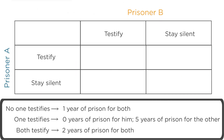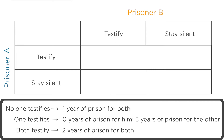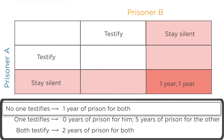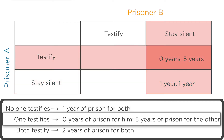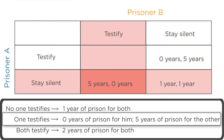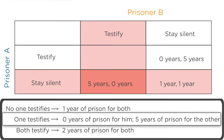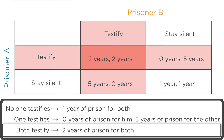We can model this by writing down a payoff matrix, which shows the implications for both players under each decision they make. If both prisoners A and B stay silent, they each get a year in prison. If A testifies but B stays silent, A goes free — zero years in prison — and B gets five years. If B testifies but A stays silent, then B goes free and A gets five years. And if they both testify on each other, they each get two years.